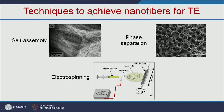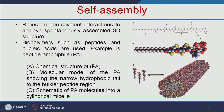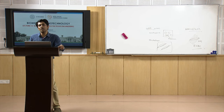What techniques are available to achieve nanofibers for tissue engineering? The first is self-assembly, the second is phase separation, and the third is electrospinning. Self-assembly, as explained in an earlier lecture on protein nanotechnology, uses peptides with hydrophilic heads and hydrophobic tails that can self-assemble to form a three-dimensional scaffold.